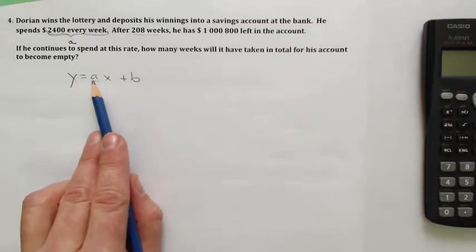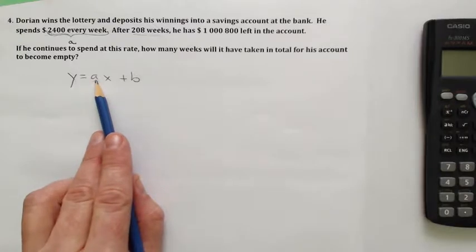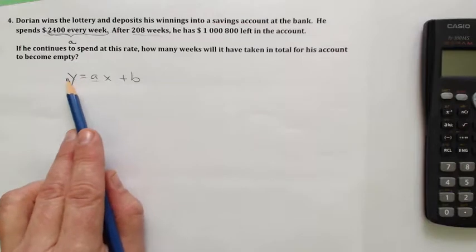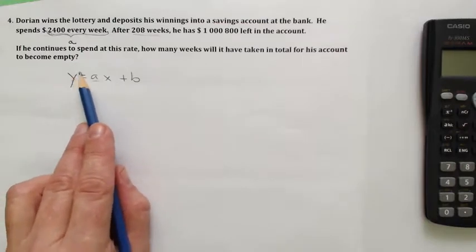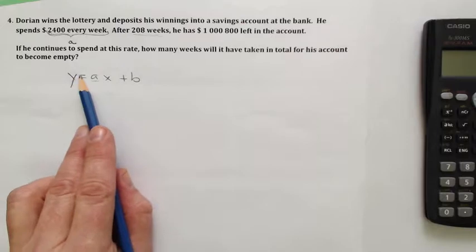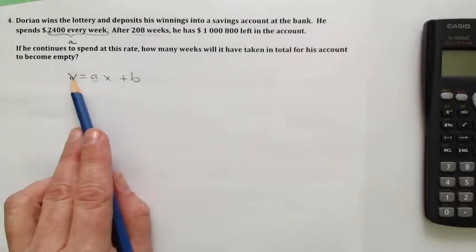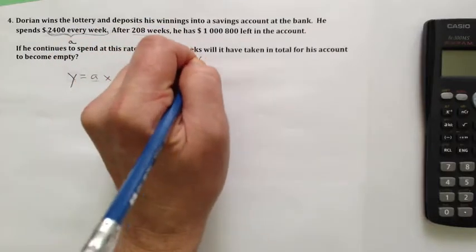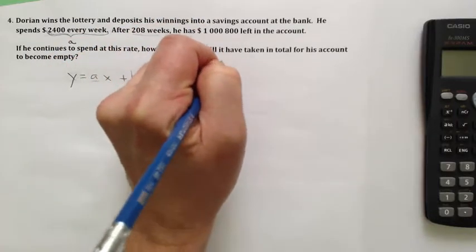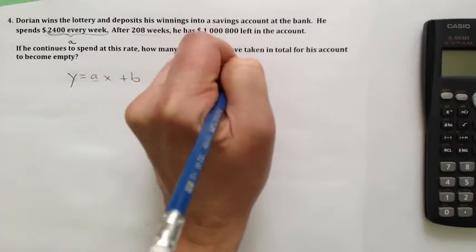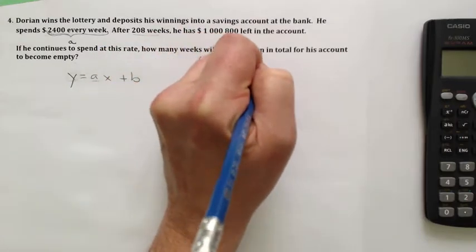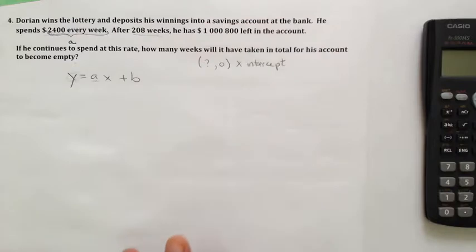Next up, what they're really asking me is, when is this going to hit zero? Like, how many weeks have to go by for the amount of money in his bank account to hit zero? So what they're really saying is, find when that Y is zero, which is code for X-intercept.